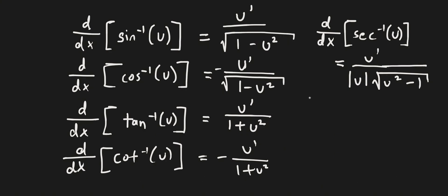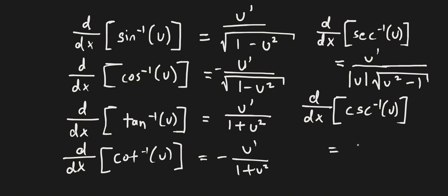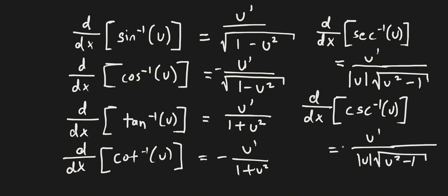The derivative of cosecant inverse of u is going to be equal to u prime all over the same thing — the absolute value of u times the square root of u squared minus 1 — but then we have a negative in front because there's a c.